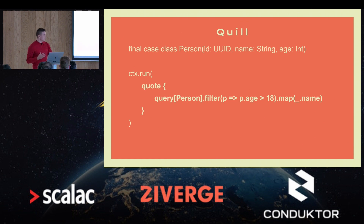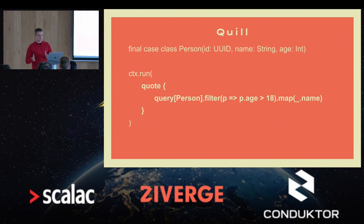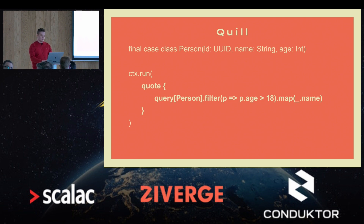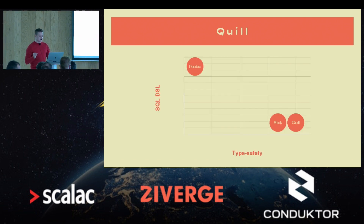Quill is very typesafe — it actually generates queries at compile time. In VS Code, when you hover over a query description, you can see the query you'll eventually execute on the database, which is amazing. But when it comes to the quoted DSL, in my opinion it takes some getting used to and doesn't resemble SQL that much. So in terms of these two criteria, Quill ends up somewhere near Slick.